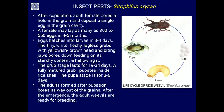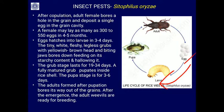The eggs hatch into larvae called grubs - in Coleoptera the larval stage is called grubs. They have a yellowish-brown head and biting jaws, and bore into stored grains feeding on the starchy content, hollowing them out. The grub stage lasts about 30 to 34 days. After this, the larva pupates inside the grain shell itself; the pupal stage is about 3 to 6 days.